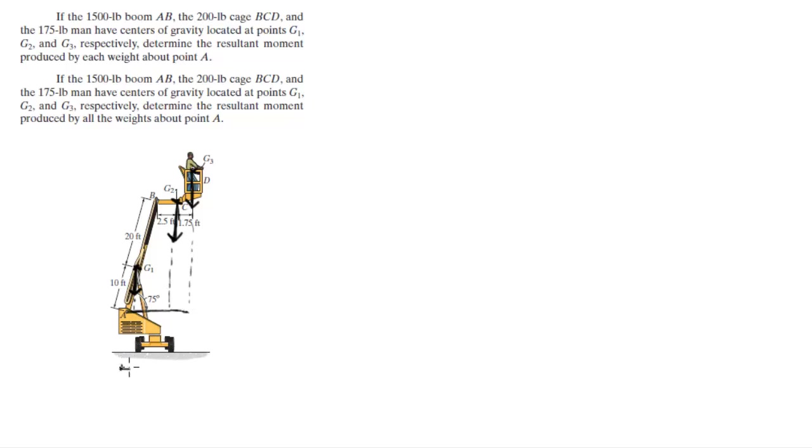Now we've got three different lengths and three different forces. WG1 is equal to 1500 pounds as given, WG2 is equal to 200 pounds, and WG3 is equal to 175 pounds.